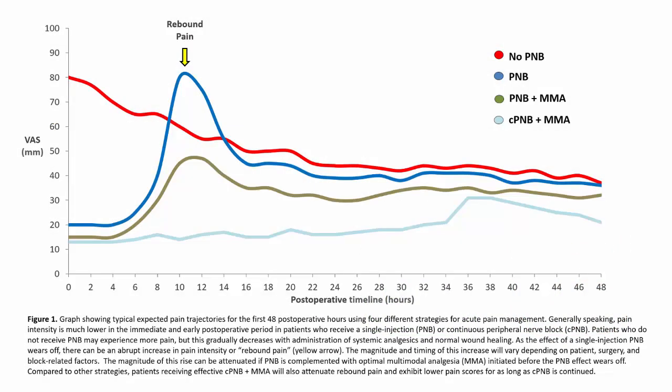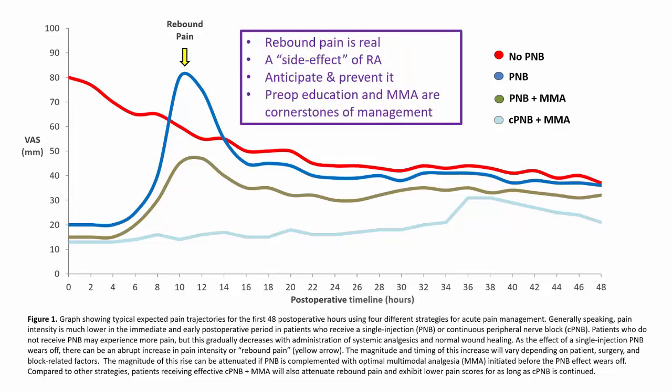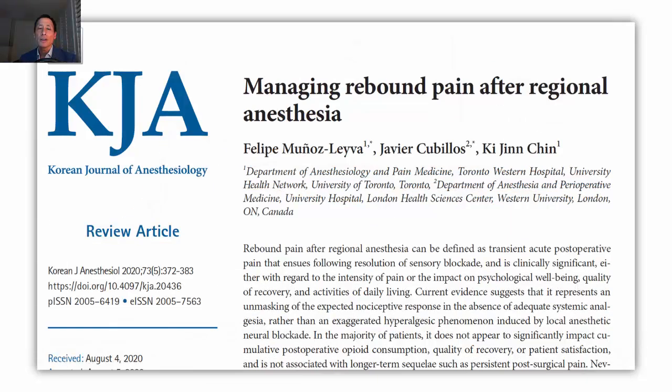So in conclusion, rebound pain is a phenomenon that does indeed exist and is something that all of us who practice regional anesthesia must be aware of. Consider it a side effect of regional anesthesia, similar to the other side effects that we counsel patients about in general anesthesia. It's not something we see all of the time, but it occurs often enough and when it does, can cause significant distress to patients. Preoperative counseling and education together with appropriate systemic multimodal analgesic prescribing is the cornerstone of management. For those wishing to explore this further, please refer to our recent review article published last year in the Korean Journal of Anesthesiology, which is free to access.